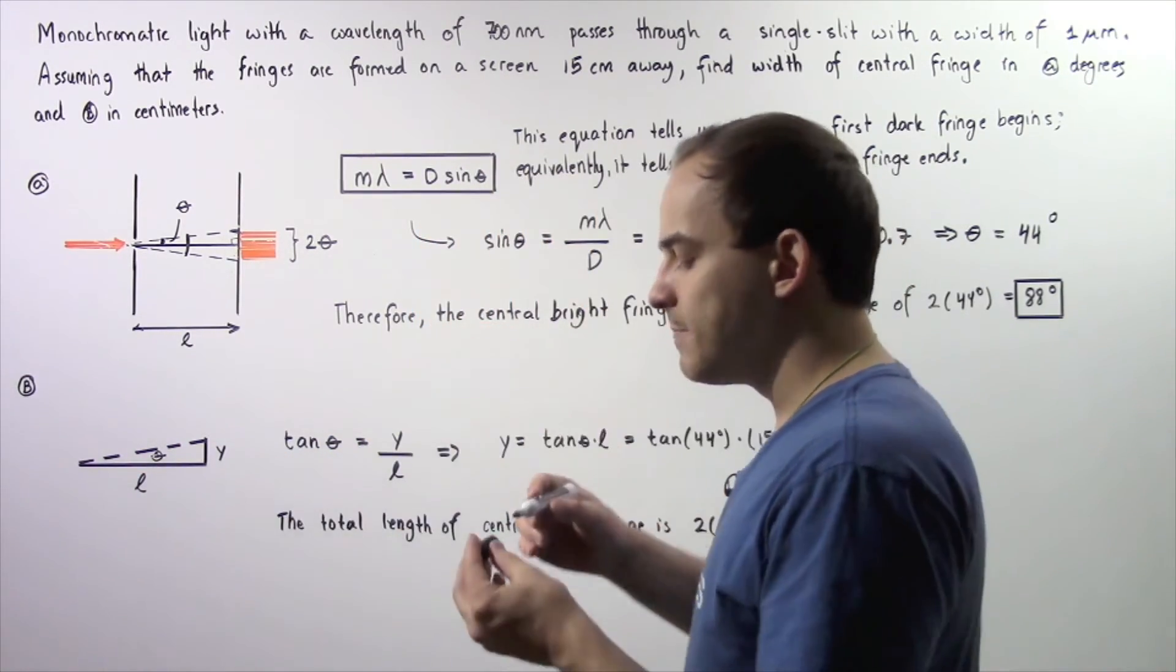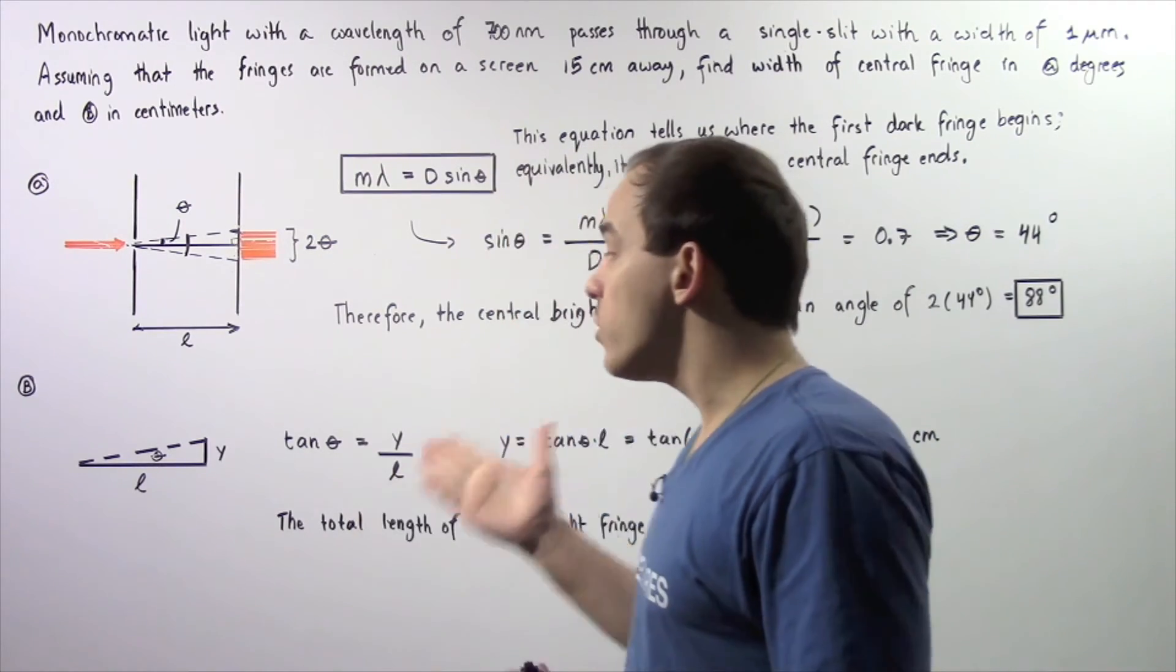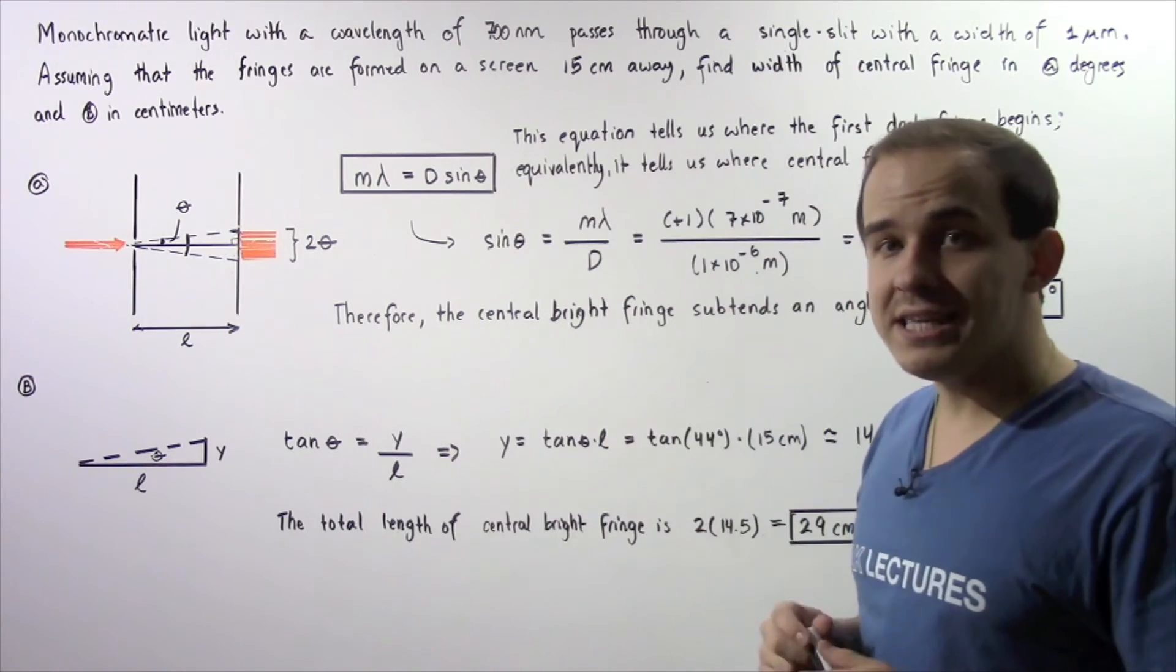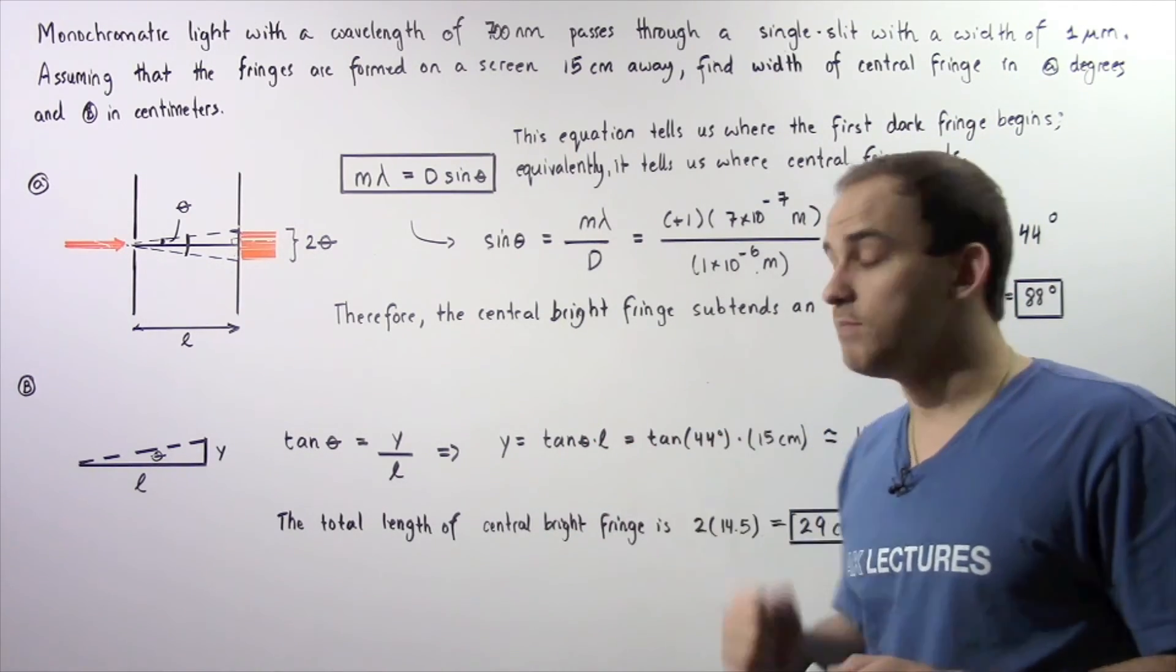Let's use the tangent trig function: tangent of the angle theta is equal to opposite side divided by the adjacent side, so y divided by L. We're looking for y, so let's solve for y. Y is equal to tangent theta multiplied by L.